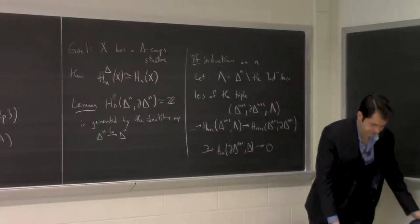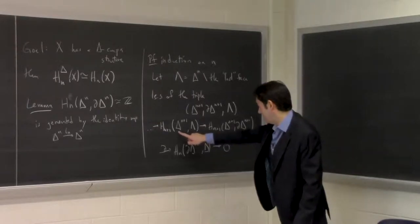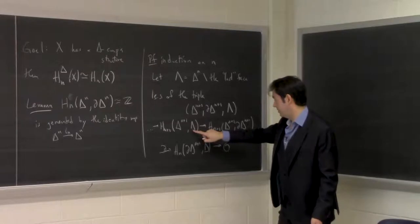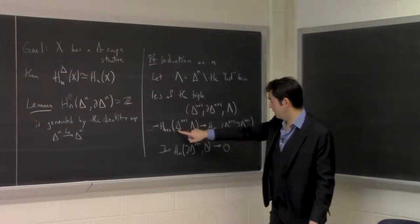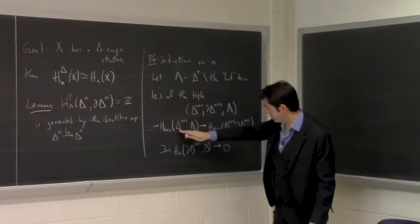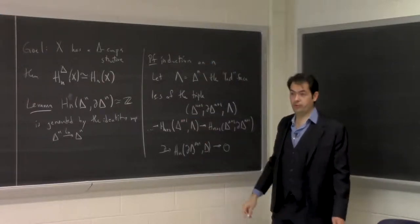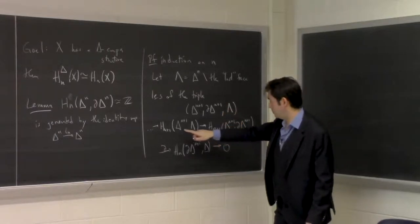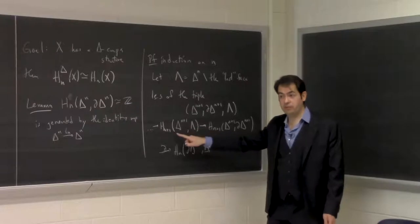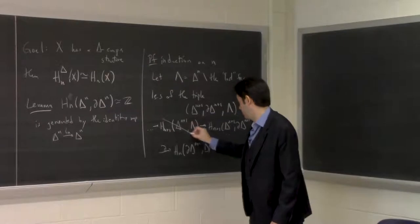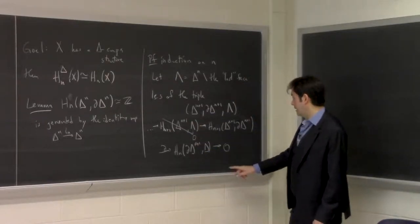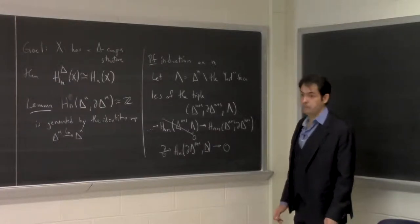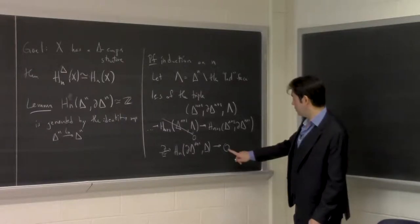Let's stare at this. Δ^{n+1} is contractible — it's just like a disc — and ∂Δ^{n+1} is part of its boundary. So you can deformation retract Δ^{n+1} onto ∂Δ^{n+1} by pushing up from the base, just like taking the triangle's bottom side and pushing it up until you retract onto the other two sides. So those two are the same up to homotopy, and relative homology when you put a space in with itself is always zero. This makes one map in the long exact sequence an isomorphism. The bottom term was zero just by dimensional reasons.